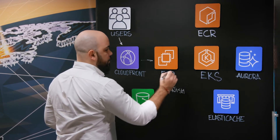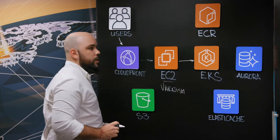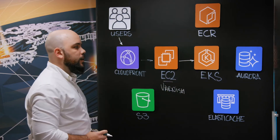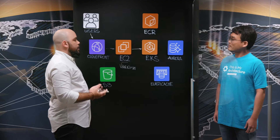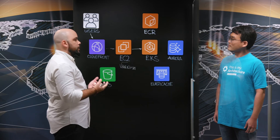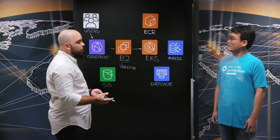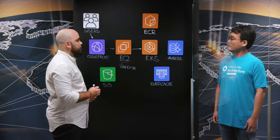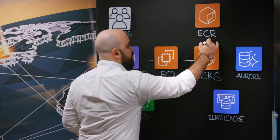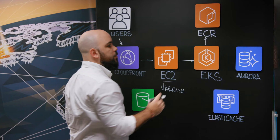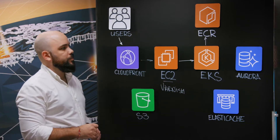The traffic is then forwarded to EKS, Elastic Kubernetes Service. From Elastic Kubernetes Service we host all our Magento applications as well as other services. Those Docker images are pulled from ECR, Elastic Container Registry.